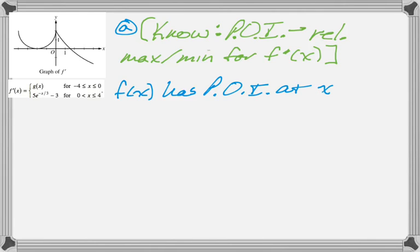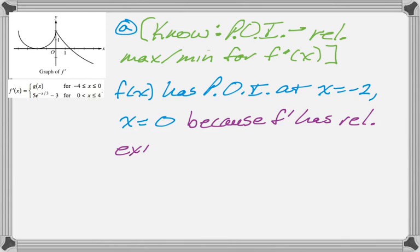f of x has a point of inflection at x equals negative 2 and at x equals 0. And then we want to give a reason. So because f prime has relative extrema at those x values. And that's really it.